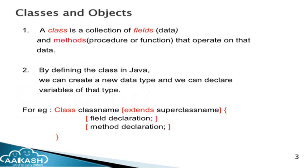A class is a user-defined data type, just like we have built-in data types such as int, float, and character. We can define our own custom data types, and by using them we can create objects as well as invoke methods or properties using that object. This is the general definition of the class.